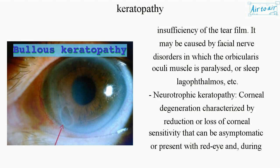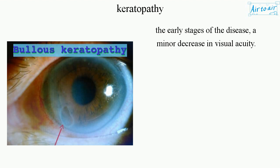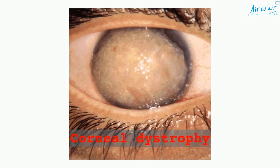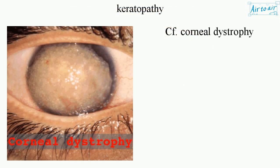Neurotrophic keratopathy: corneal degeneration characterized by reduction or loss of corneal sensitivity, that can be asymptomatic or present with red eye during the early stages of the disease, and a minor decrease in visual acuity. Cf. corneal dystrophy.